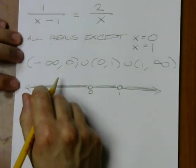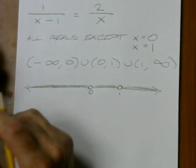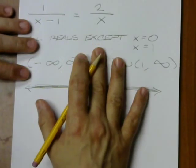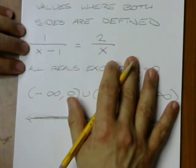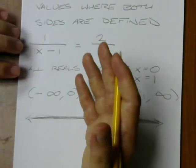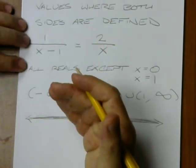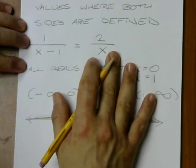So if we want the domain of an equation, what we're going to do is we're going to find all the numbers which we can plug in where the sides exist. And what do we have to watch out for? Well, the only things we have to watch out for are zeros in the denominator and negatives inside an even root. Those are the two things we want to watch out for.